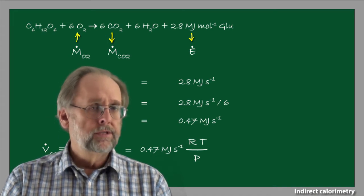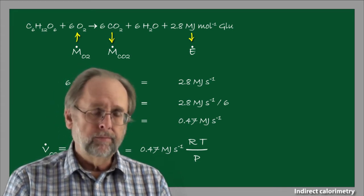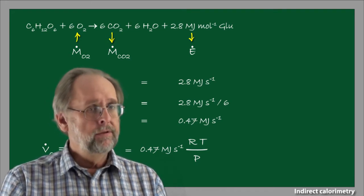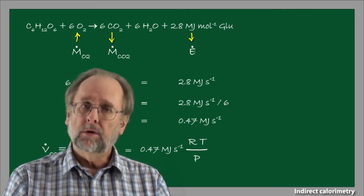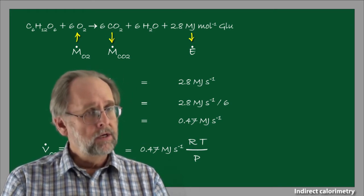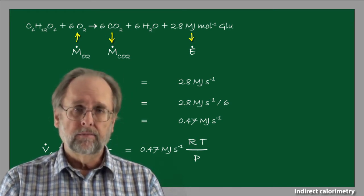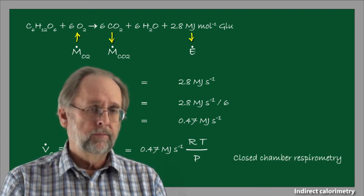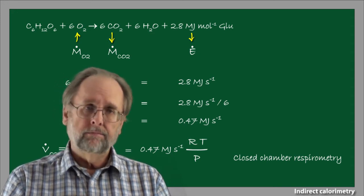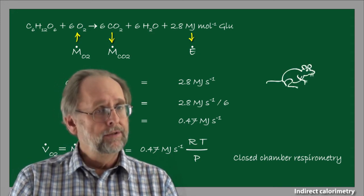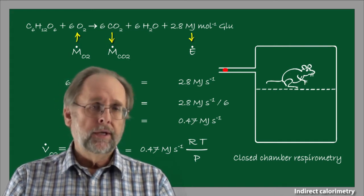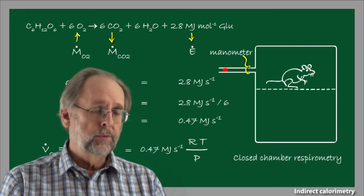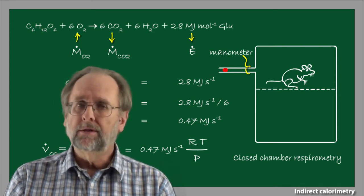There are typically two ways to measure metabolic rate through indirect calorimetry. Both involve a technique known as respirometry, which is simply the measurement of consumption or production of the respiratory gases — carbon dioxide and oxygen. One method is known as closed chamber respirometry. This technique places an animal, like a mouse, into a sealed chamber, which is usually equipped with a manometer consisting of a droplet of liquid placed in a long tube.